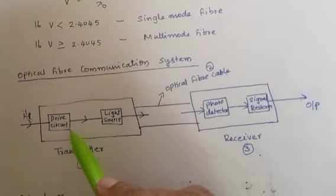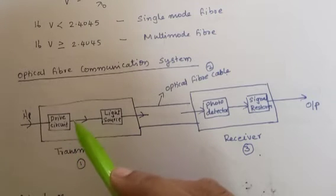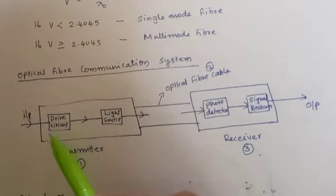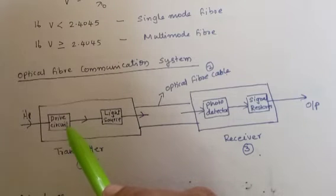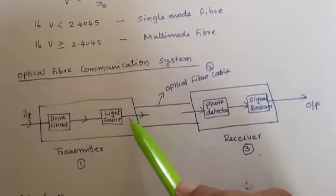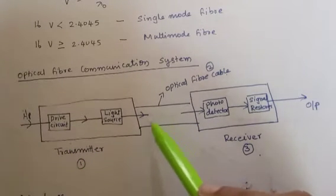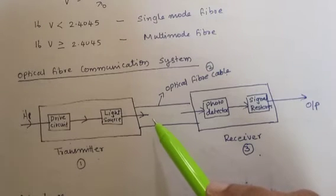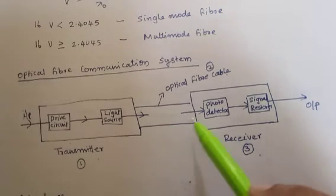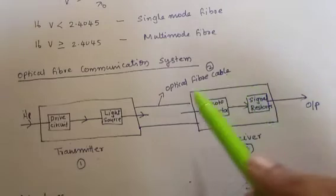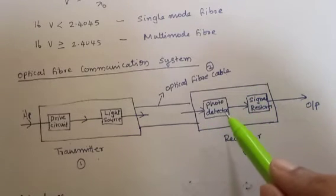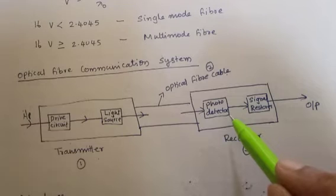The drive circuit will convert optical pulses to electrical signals. The analog signal undergoes analog-to-digital conversion. The electrical signal is converted to an optical signal, which then enters the optical fiber cable. The optical signal travels at the velocity of light through the cable. At the receiver end, the photo detector converts the optical signal back to an electrical signal.